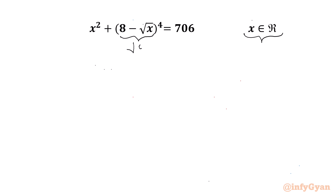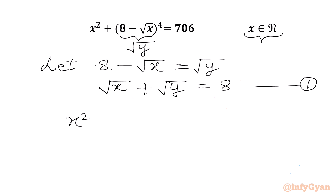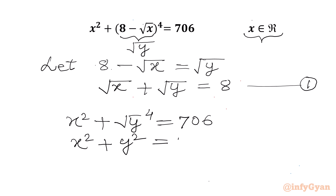I will call this bracket equal to square root y. So let us write here: 8 minus square root x equal to square root y, or we can write square root x plus square root y equal to 8. Let us say this is equation 1. Now we will write our original equation: x square plus square root y whole power 4 equal to 706, or x square plus y square equal to 706. Let us say this is equation 2.